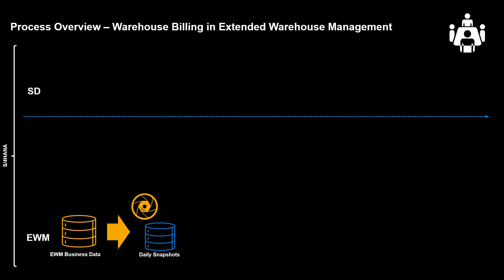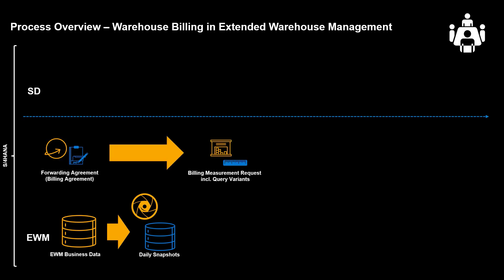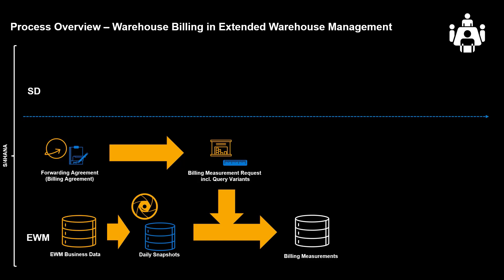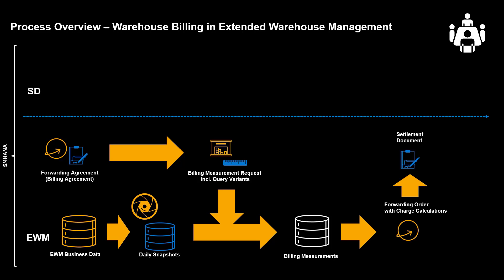It's time to have a look at a system example. First, we will begin by looking at some of the snapshots of EWM business data. Second, we will create a forwarding agreement reflecting the prices we charge for our services to a specific customer. We will then connect the forwarding agreement items with relevant billing measurement requests. When they are ready, we will run the queries and create the billing measurements. We will distribute the billing measurements into a forwarding order, and based on the measurements, we will calculate the charges. With the charges calculated, we will generate a forwarding settlement document. After posting the settlement document, a billing invoice will be created for us to look at.